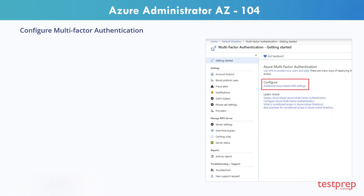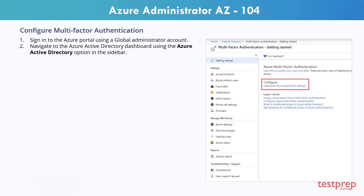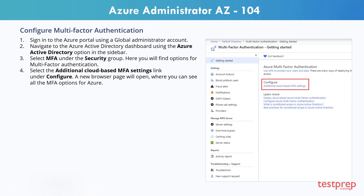To configure multi-factor authentication: step 1, sign into the Azure portal using a global administrator account. Step 2, navigate to the Azure Active Directory dashboard using the Azure Active Directory option in the sidebar. Step 3, select MFA under the security group — here you will find options for multi-factor authentication. Step 4, select the additional cloud-based MFA settings link under configure. A new browser page will open where you can see all the MFA options for Azure.